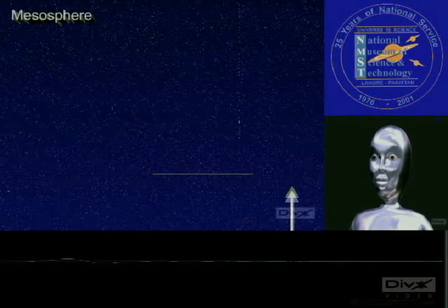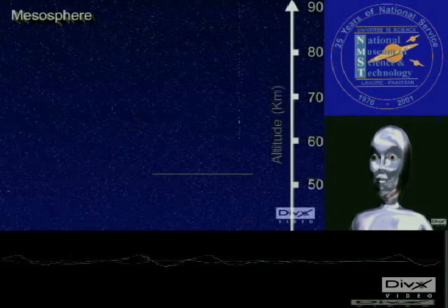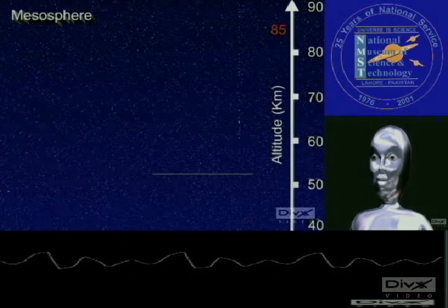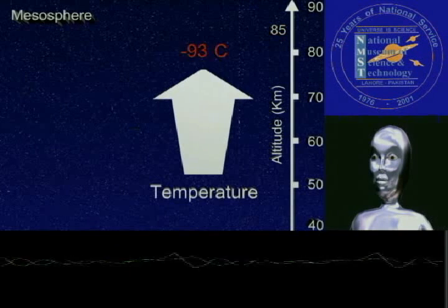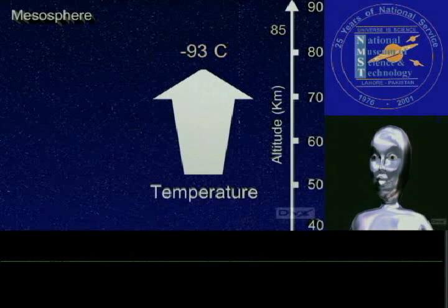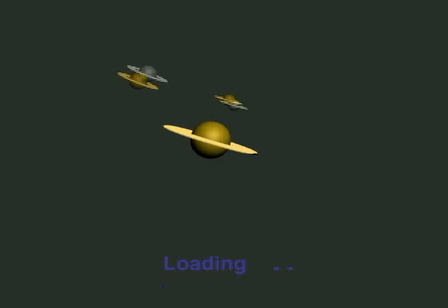The mesosphere starts just above the stratosphere and extends 35 km above the stratosphere. In this region, the temperatures again fall as low as minus 93 degrees Celsius as you increase in altitude.